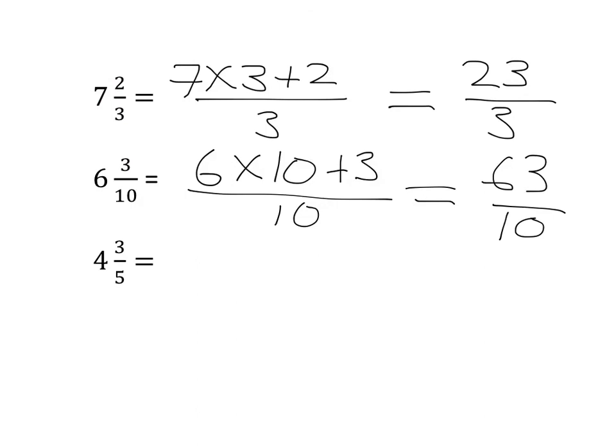Okay, quickly try the last one yourself. Pause the video, turn four and three fifths into an improper fraction. Your answer should look something like this. You should take four and multiply it by five and add on three. You're still dealing in fifths. Four times five is twenty plus three gives us twenty-three over five.